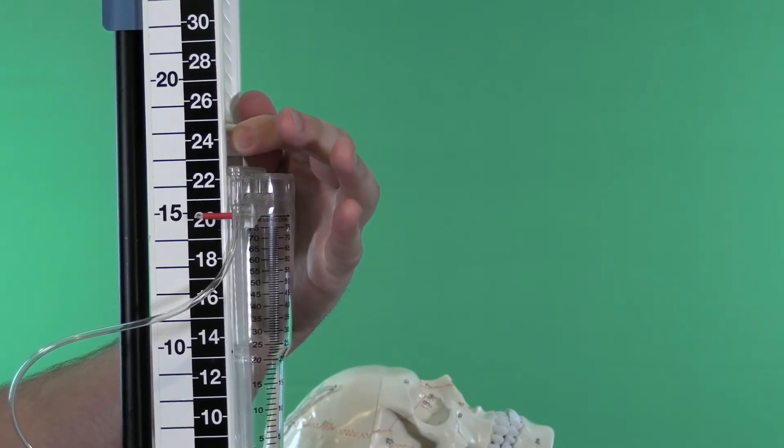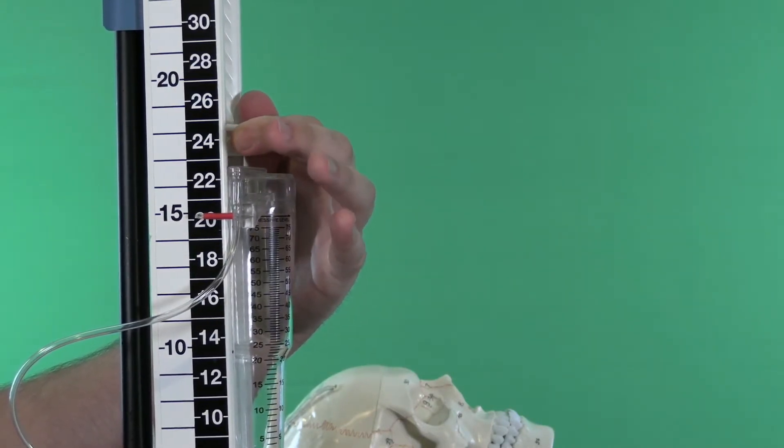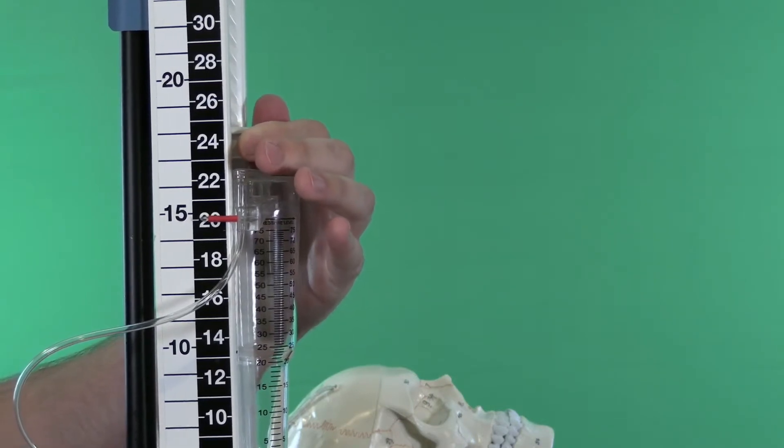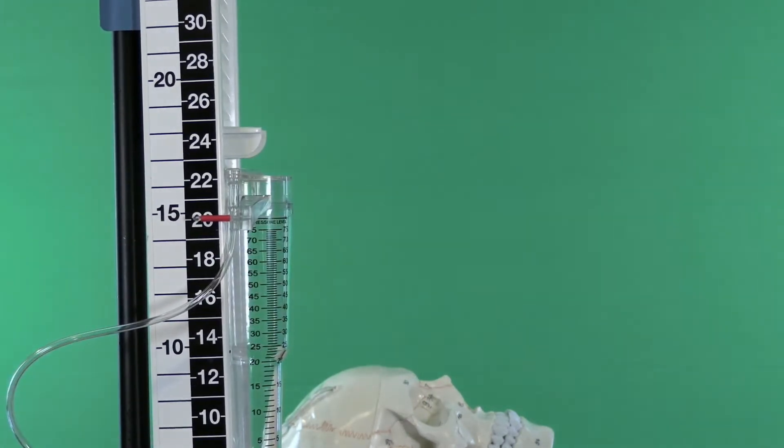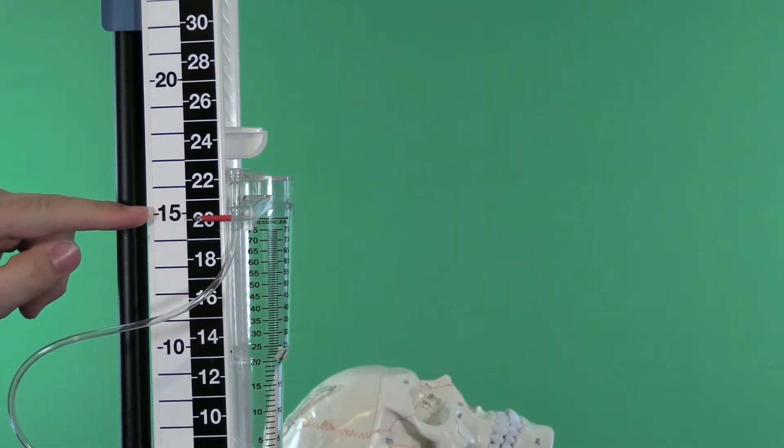Typically the neuro intensivists are going to tell you that they want it to be at like 20 or so for an ICP. It's important to look at this millimeters of mercury as well.